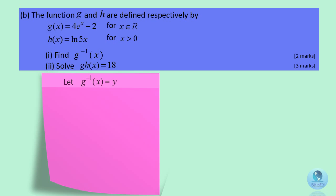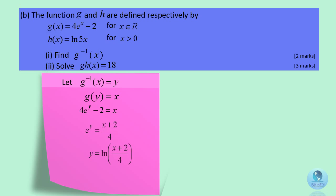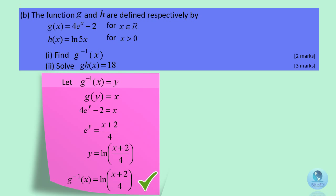Let the inverse function of g(x) equal y, so g(y) equals x. Then 4e to the power of y minus 2 equals x, and you get y equals the natural log of (x plus 2) divided by 4. Hence, the inverse function of g(x) is the natural log of (x plus 2) divided by 4.